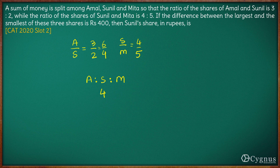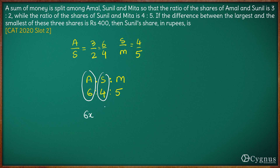The ratio of Amal and Sunil's amounts is 6:4 and that of Sunil and Meeta is 4:5. Now that we have the combined ratio, we know Amal gets the highest amount and Sunil gets the least amount. So the amount Amal gets is 6x, Sunil gets 4x, and the difference between them is 400 rupees. From here, x comes out to be 200.